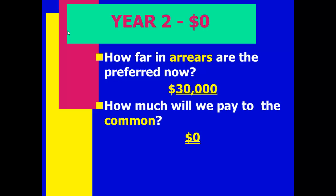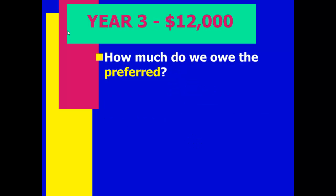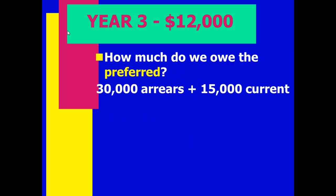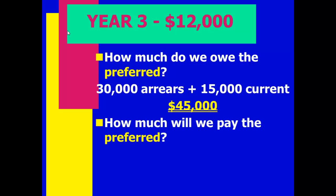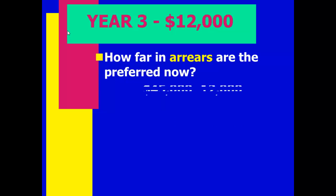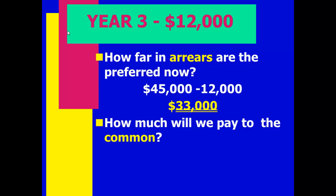Year 3: We have $12,000. We owe the preferred $45,000 — $30,000 in arrears plus $15,000 for this year. We pay them $12,000, which is all we have. We're now behind by $33,000. Common stockholders get nothing. Preferred got something this year, but common is at the bottom of the pecking order and didn't get anything.